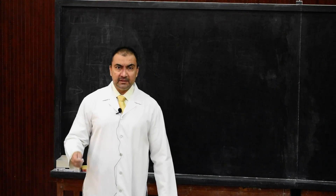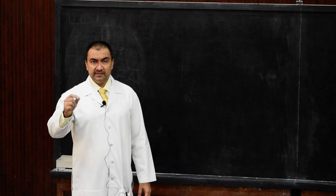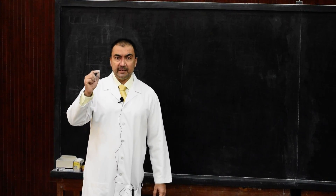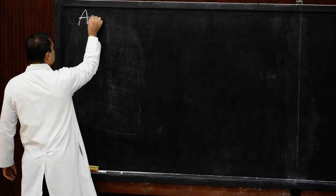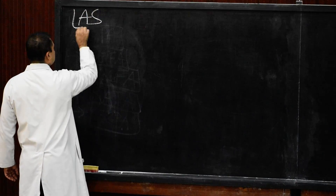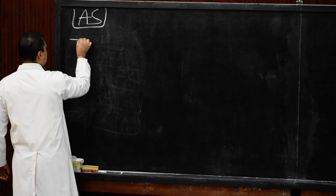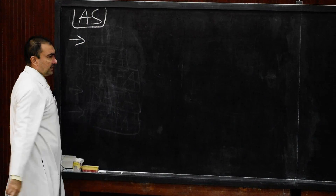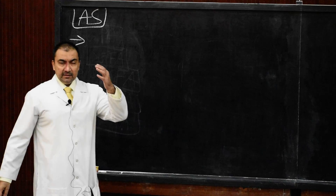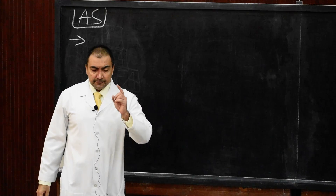Good morning students. Here we come up with the knee joint arterial supply, nerve supply, and applied anatomy of the knee joint. The arterial supply of the knee joint — there will be a list of arteries.